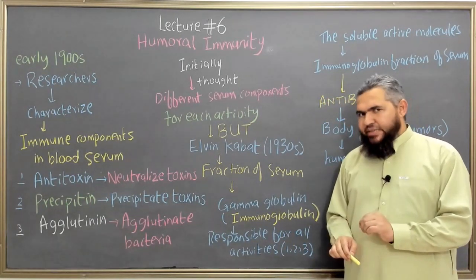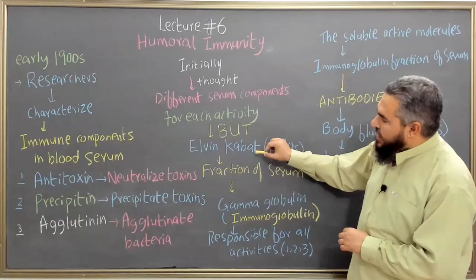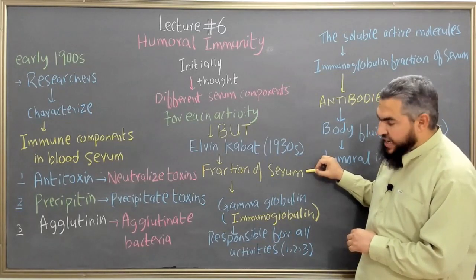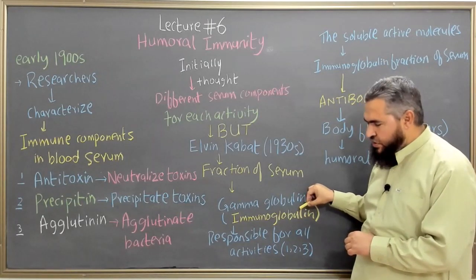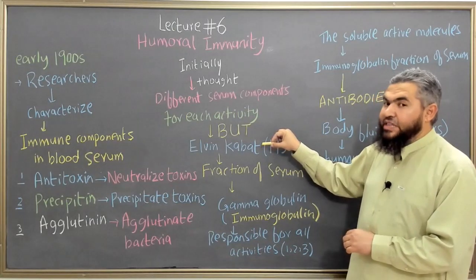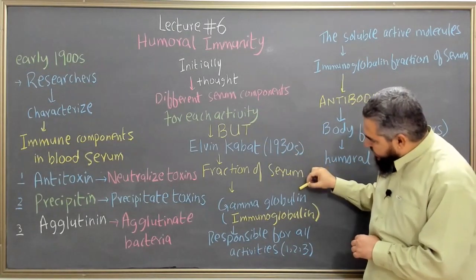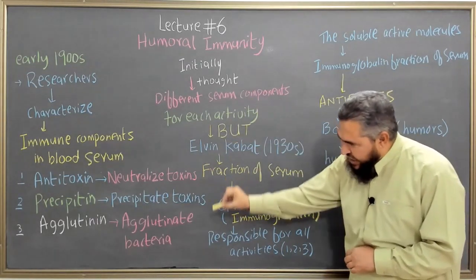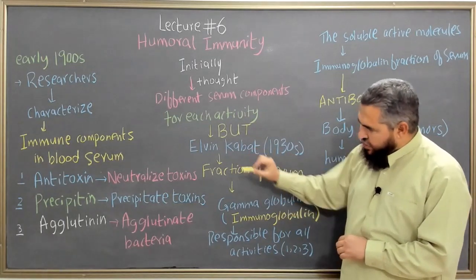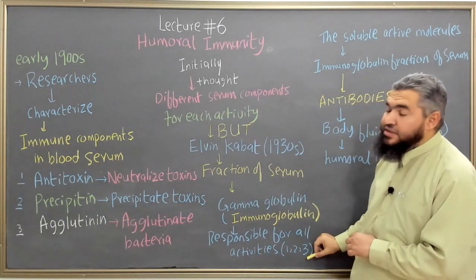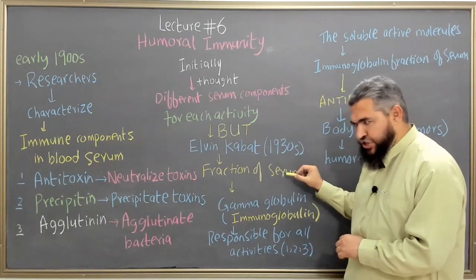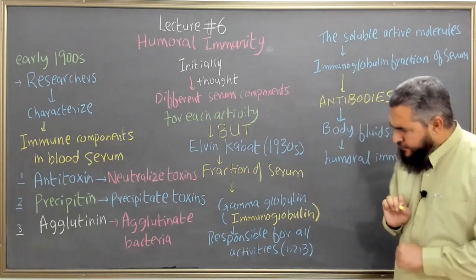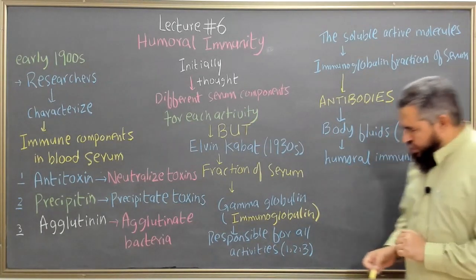But researchers at that time, particularly the efforts of Elvin Kabat in the 1930s, were able to identify a fraction of the serum which they called at that time the gamma globulin — what we now call immunoglobulin. The efforts of Elvin Kabat along with other researchers identified that this gamma globulin fraction of the serum is responsible for all of these activities: acting as antitoxin, acting as precipitin, and acting as agglutinin.